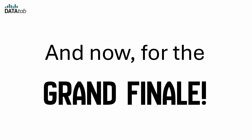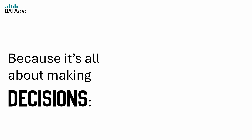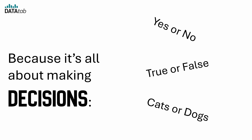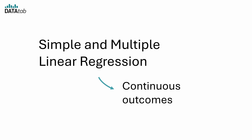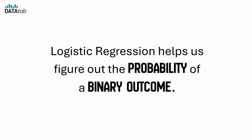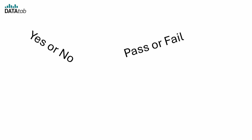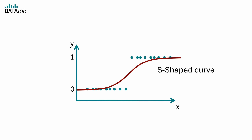And now for the grand finale — logistic regression. It's the drama queen of regression models. Why? Because it's all about making decisions: yes or no, true or false, cats or dogs. Unlike simple and multiple linear regression, which deal with continuous outcomes, logistic regression helps us figure out the probability of a binary outcome — like yes or no, pass or fail, cat person or dog person. Instead of drawing a straight line, logistic regression draws a curve — specifically an S-shaped curve called the sigmoid function.